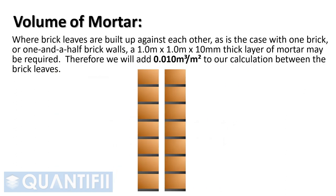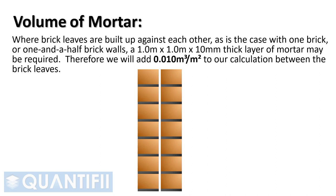Where brick leaves are built up against each other, as is the case with one brick or one and a half brick walls, a 1 meter by 1 meter by 10 mm thick layer of mortar may be required. Therefore, we will add 0.01 cubic meters per square meter to our calculation between the brick leaves.